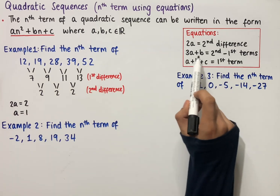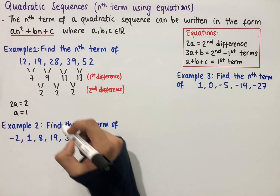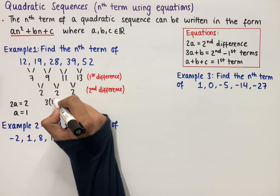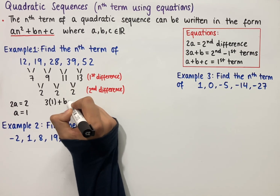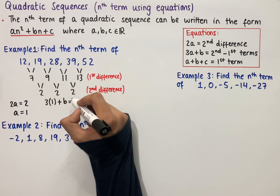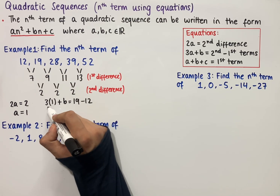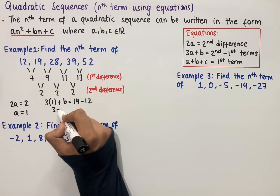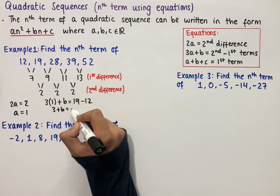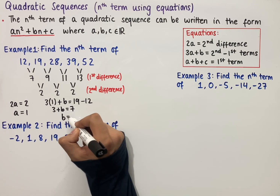Now using the second equation we have 3a plus b equals the second term minus the first term. So we can write 3 times 1 plus b which equals 19 minus 12. Simplifying, 3 plus b equals 7. And so solving this equation we end up with b equals 4.